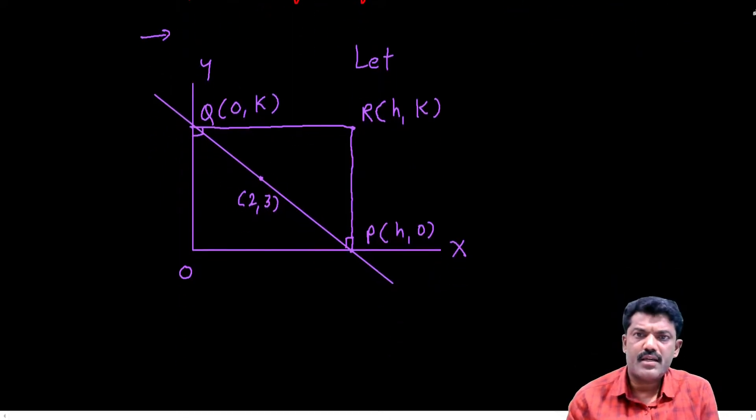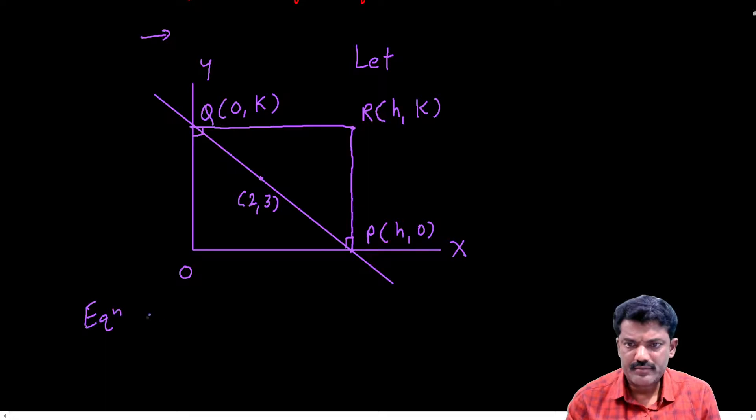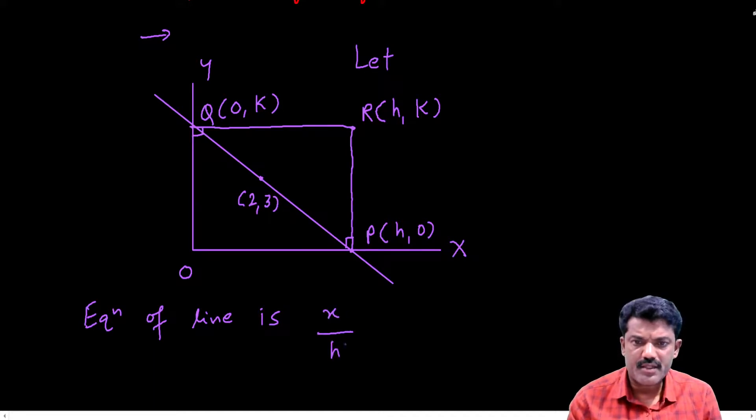The equation of the line is x by x-intercept h plus y by y-intercept k equal to 1.